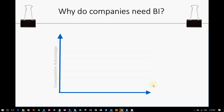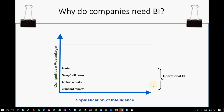Why does a company need BI? Assume you are a company that wants to gain competitive advantage. Based on the sophistication of intelligence you have, you can stay competitive in the market. The primary type is called operational BI, which deals with report generation, ad hoc reports, query and drill-down reports, and alerts. It answers questions like: what happened, how many, how often, where did it happen, where exactly is the problem, and what actions are needed.